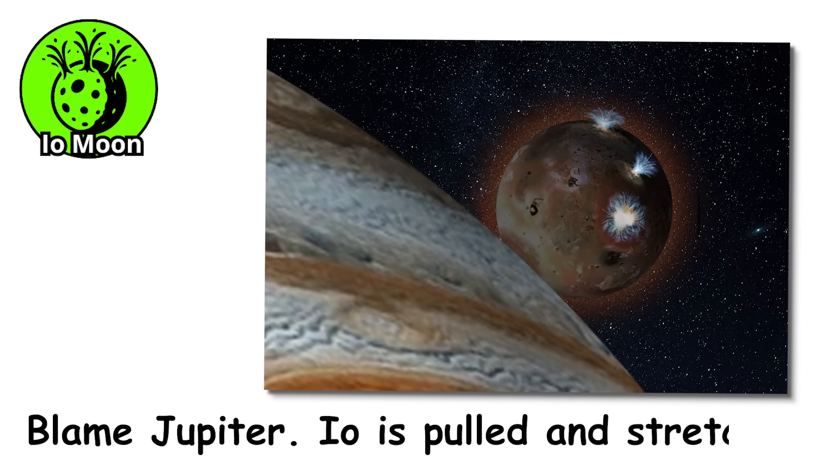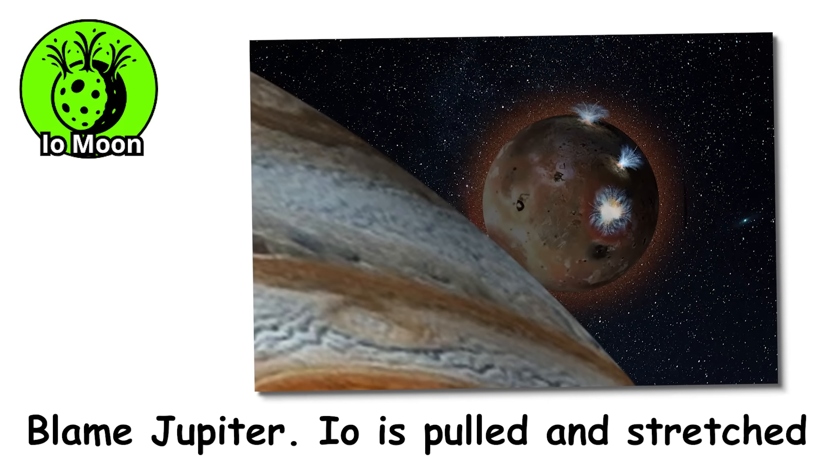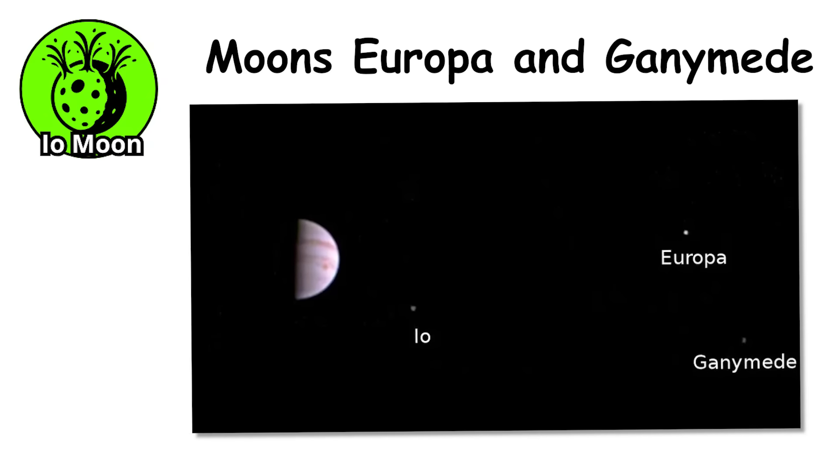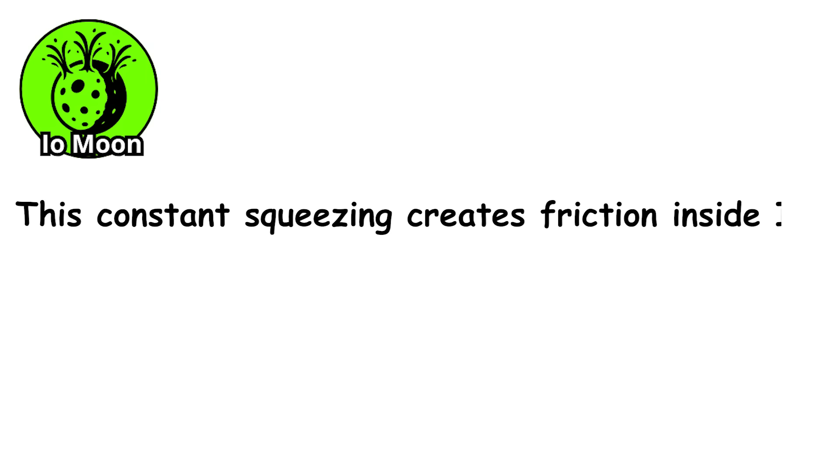Why is it like this? Blame Jupiter. Io is pulled and stretched by the massive gravity of Jupiter, along with the tug of war from nearby moons Europa and Ganymede. This constant squeezing creates friction inside Io, and that friction turns into heat. A lot of it.